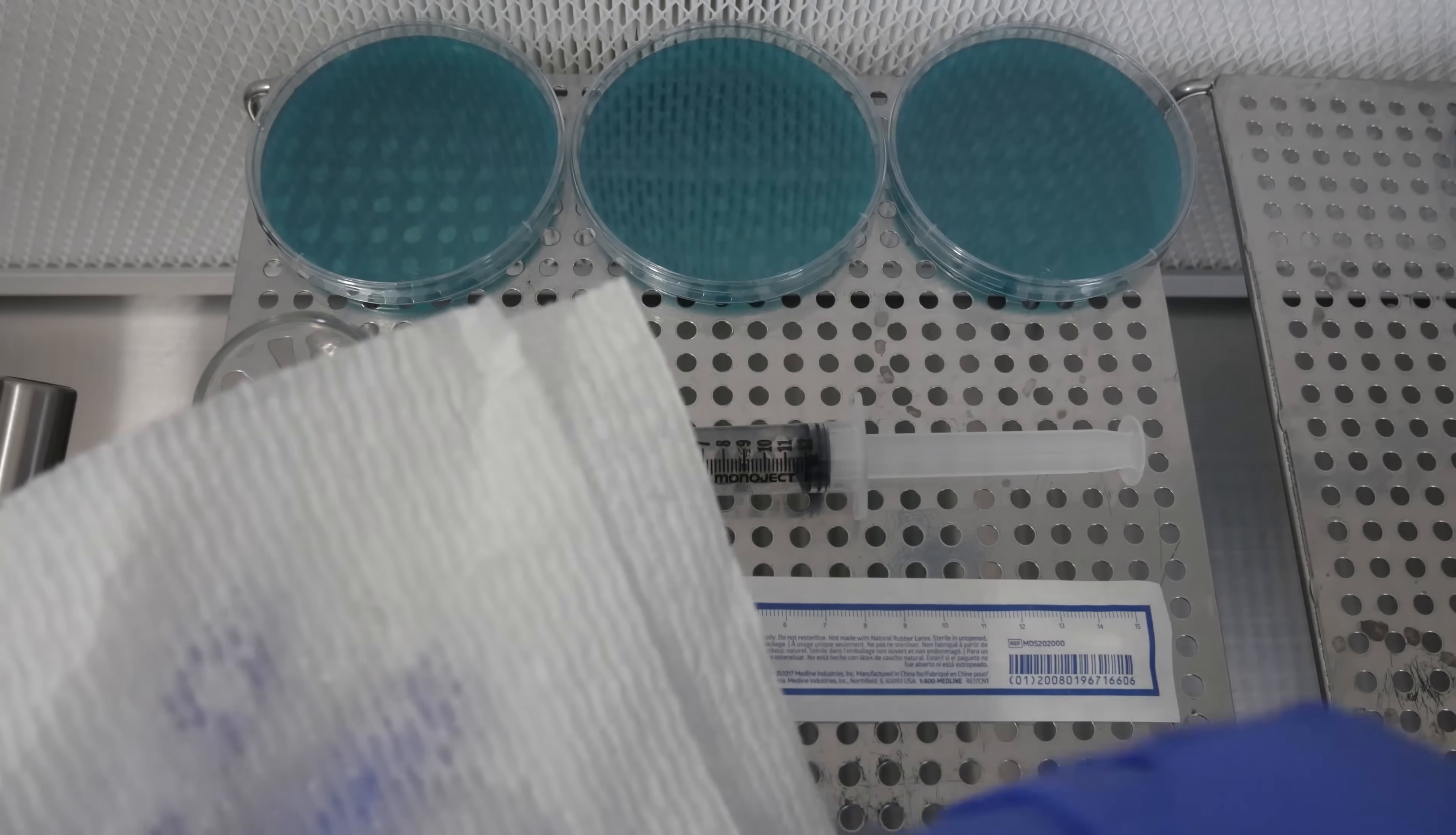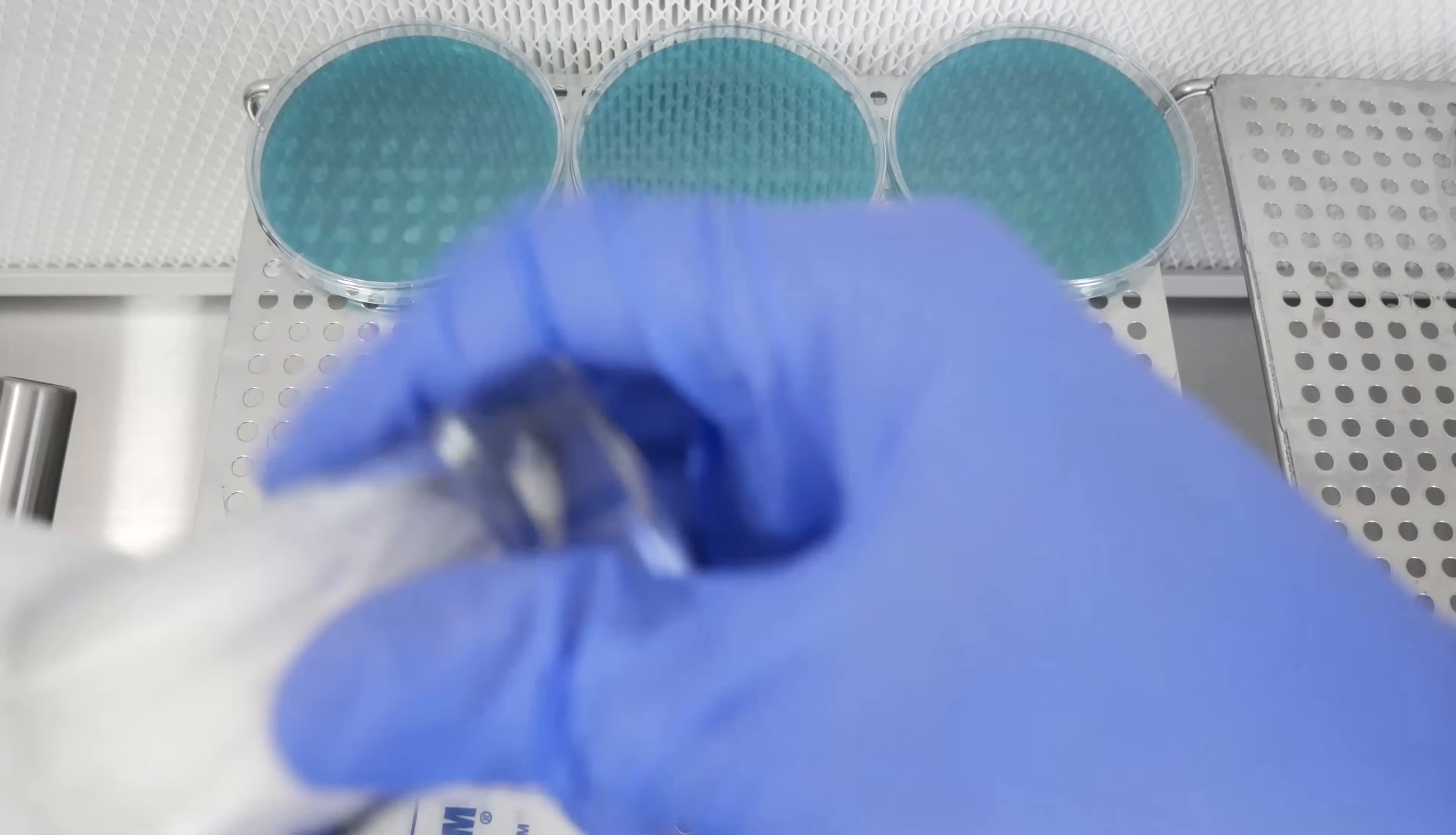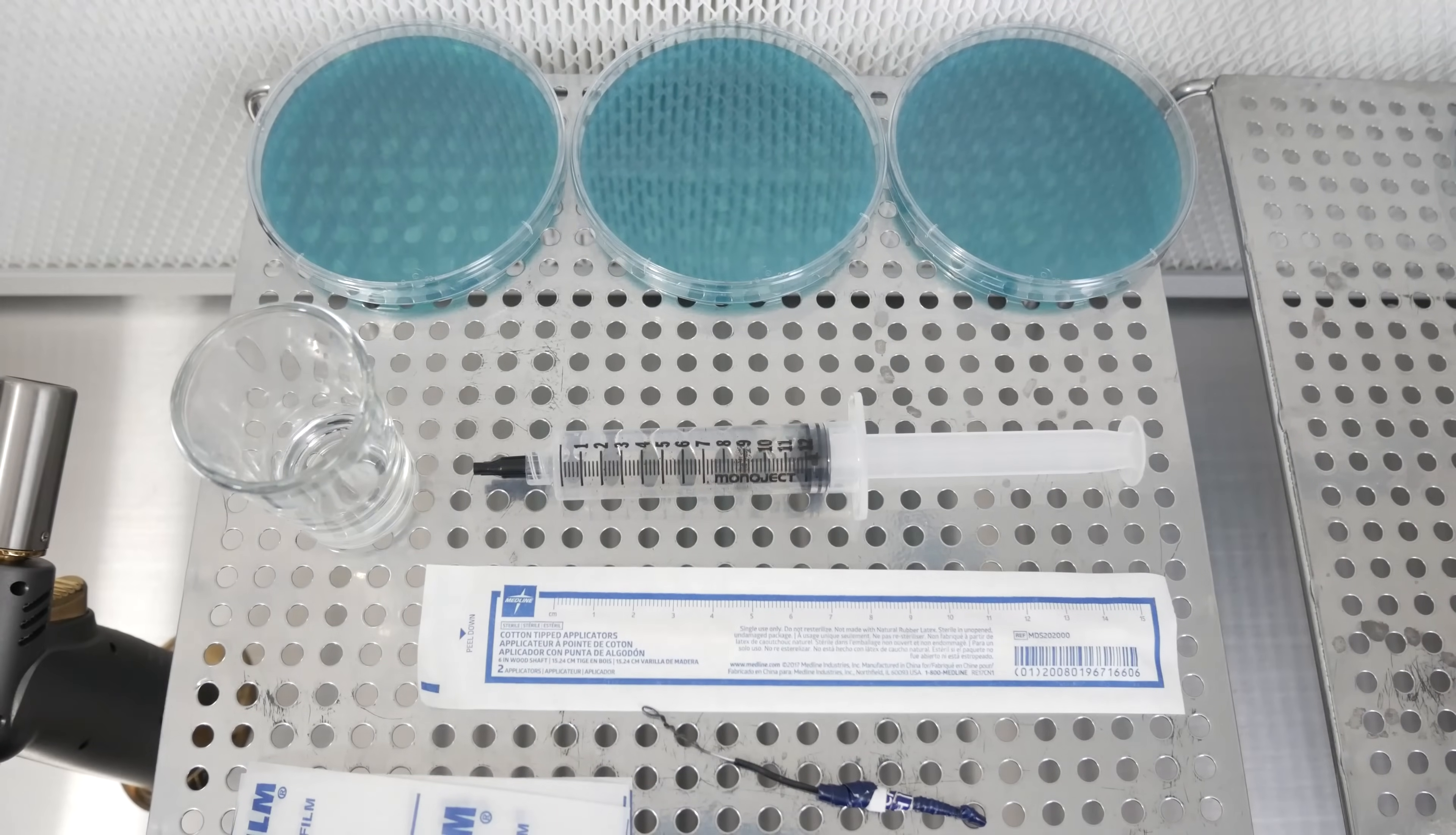Here I'm going to wipe down my inoculation loop and I have a little shot glass here I'm going to wipe down as well with the isopropyl alcohol. It's already clean but we're going to clean it up some more. It never hurts to be too clean.